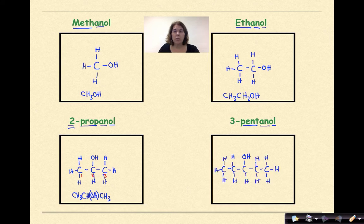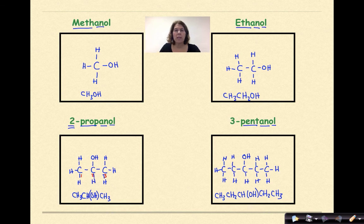When I write the condensed structural formula, I'm going to start from the left going to the right. So it's going to be CH₃-CH₂-CH(OH)-CH₂-CH₃. I am going to put that OH in parentheses to indicate that is an alcohol. And that condensed structural formula represents 3-pentanol.